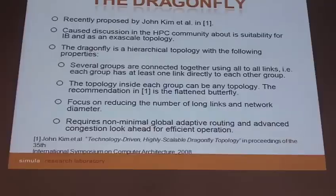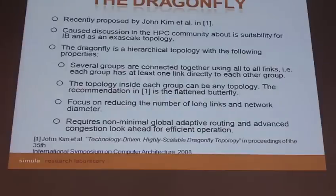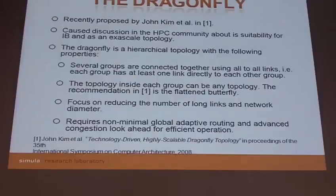The dragonfly is a hierarchical topology, meaning it consists of several layers of different topologies connected together. In the original proposal by John Kim, it consists of a set of groups that are directly interconnected with each other — each group has a direct connection to every other group. Within each group you have a separate interconnect, which can be any type of topology. The recommendation in the original paper was to use a flattened butterfly. Much of the motivation behind the dragonfly is to improve scalability and reduce cost by reducing the amount of long links and the total network diameter.